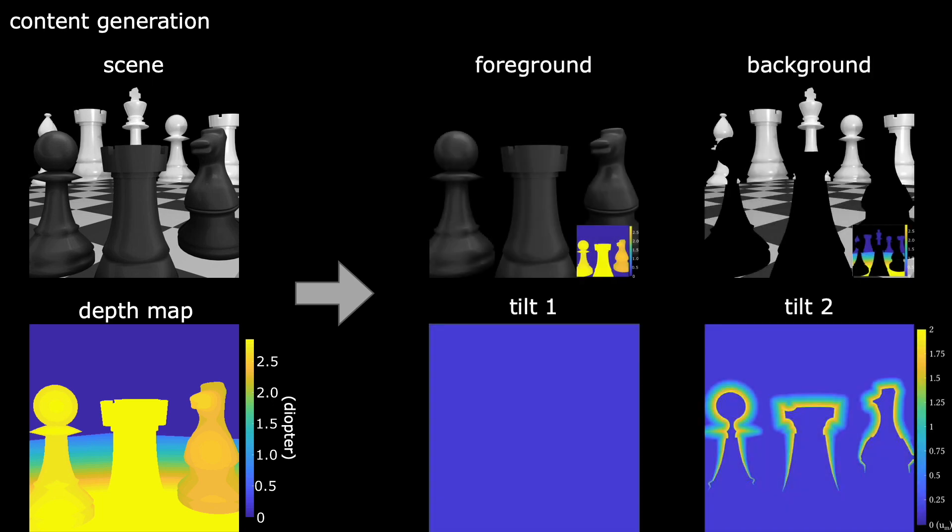Let's talk about how we generate content to show on the display and the SLM. Given a 3D scene and its corresponding depth, we decompose the scene into two parts, foreground and background. The foreground and the background will be shown sequentially within one 3D frame.